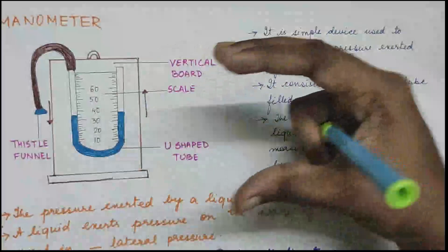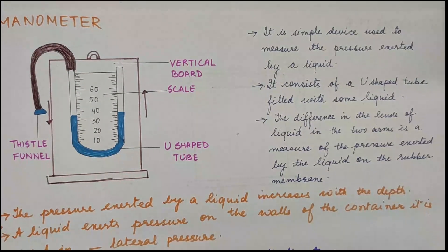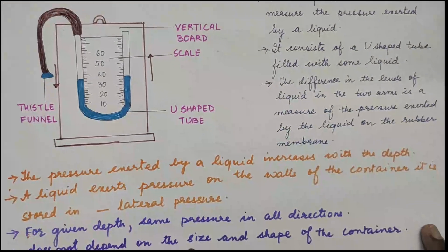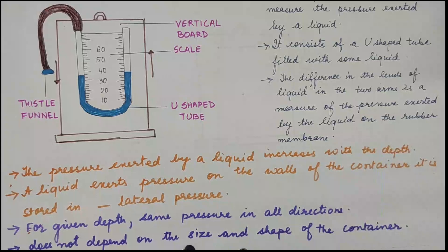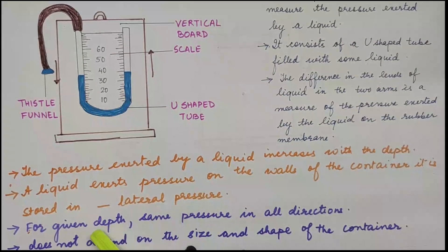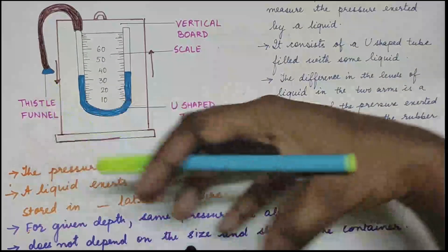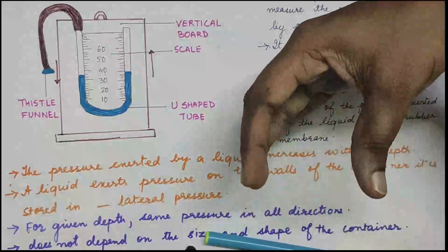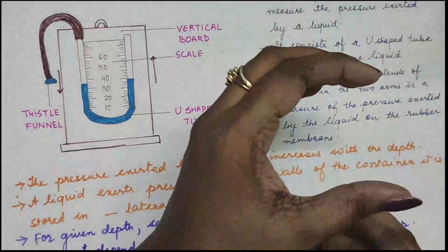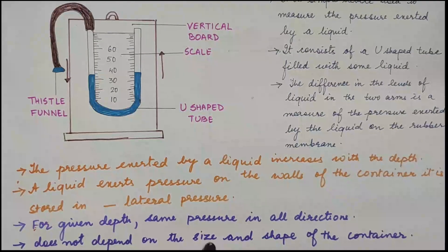As you press the thistle funnel into the liquid, the pressure changes and this device tells you the liquid pressure. Key points to remember: pressure exerted by a liquid increases with depth; liquid exerts pressure on the walls of the container — called lateral pressure; at a given depth the liquid has the same pressure in all directions regardless of the funnel's orientation; and pressure does not depend upon the size and shape of the container.